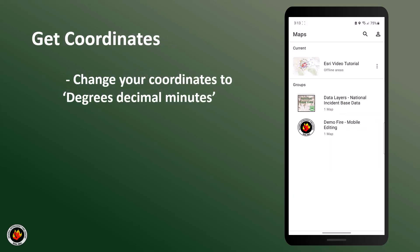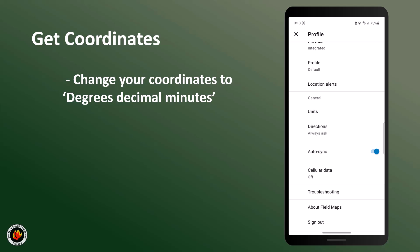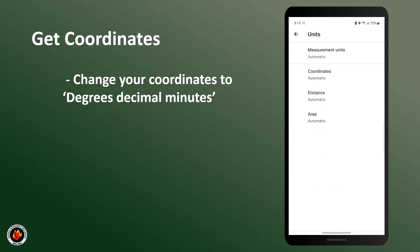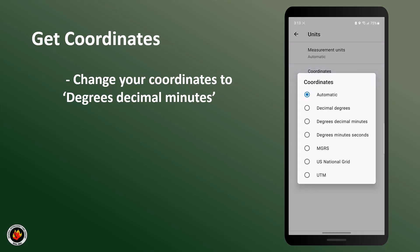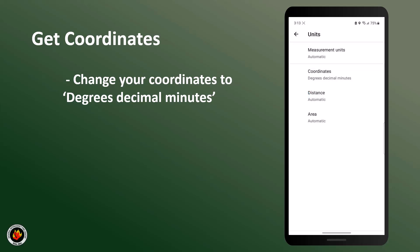Finally, we're going to gather coordinates of a drop point on the map. First, let's navigate back to Field Maps' home page. We want to make sure that our device is using the correct coordinate system. Click the profile icon in the top corner. Now under general, click units. Here we have the option to change our coordinate system. By default, we have automatic coordinates generated. The NFC standard coordinate system is degrees decimal minutes, so let's select that one. Now we're ready to collect our point.